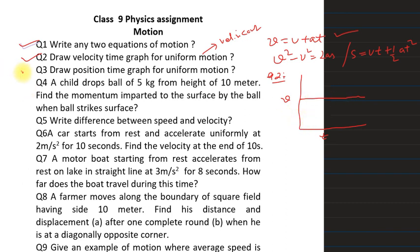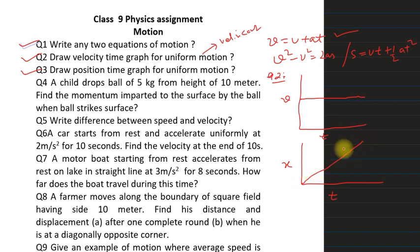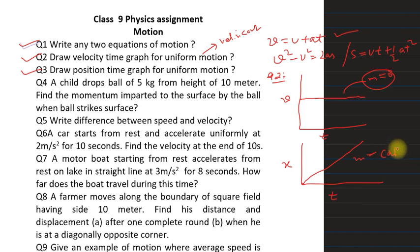Now for question 3, we have to draw a position-time graph for uniform motion — that is, an XT graph. In uniform motion, equal displacement is covered in equal intervals of time, so this is a straight line with a constant slope. In the VT graph the slope was zero, but here the slope is constant. This is the position-time graph for uniform motion.